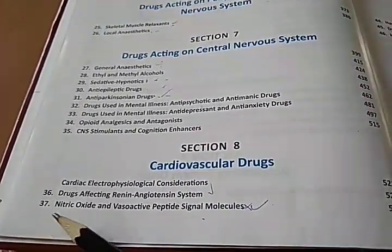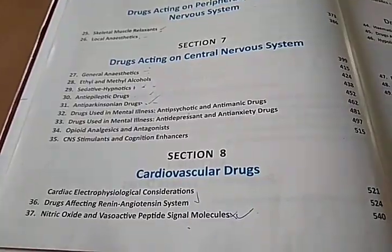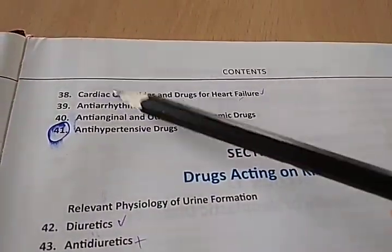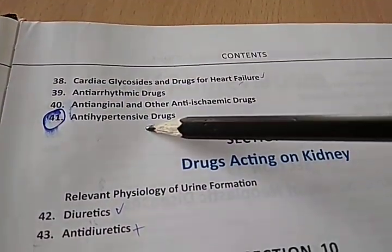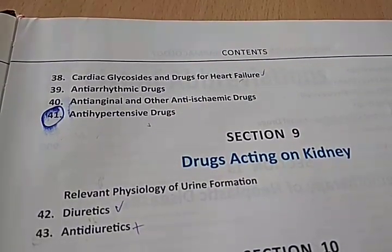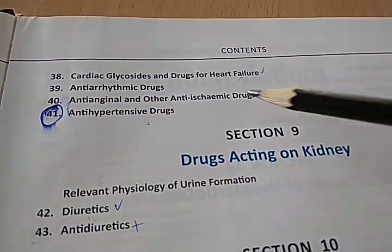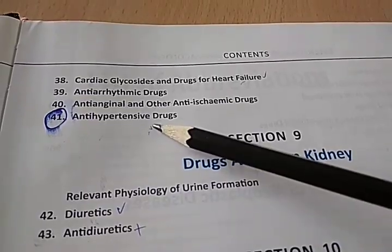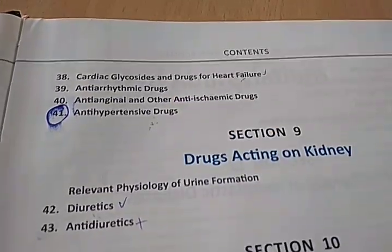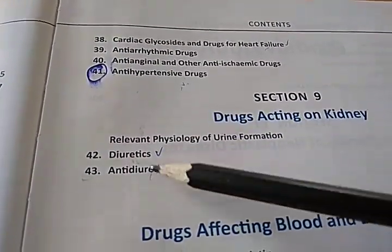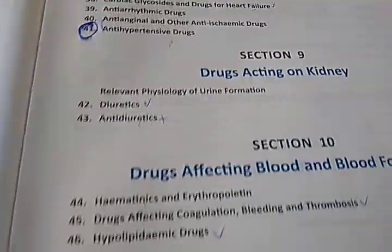Cardiovascular drugs — you will know nitric oxide, etc. Then anti-arrhythmic drugs, anti-hypertensive drugs. Beta-blockers can be anti-hypertensive, and diuretics can also be anti-hypertensive. Drugs acting on the kidney include diuretics and anti-diuretics.